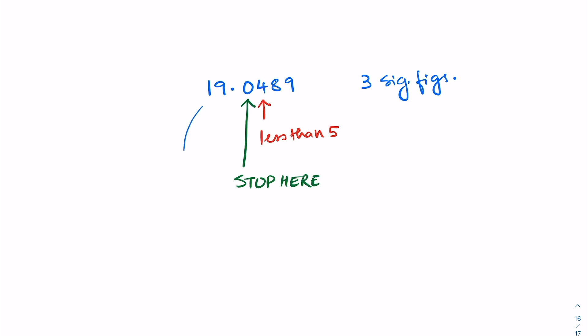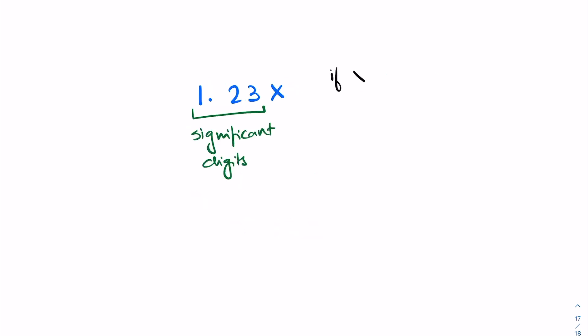This gives us the answer 19.0. In a nutshell, if the first non-significant digit is greater than or equal to 5, increase the last significant digit by 1 and drop all non-significant digits. If the first non-significant digit is less than 5, drop all non-significant digits.